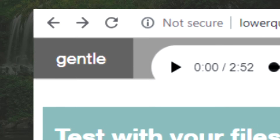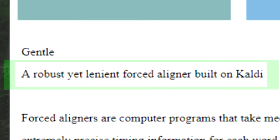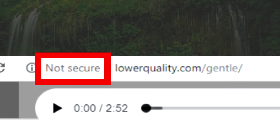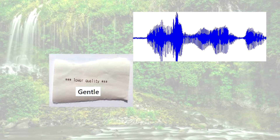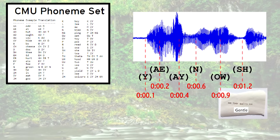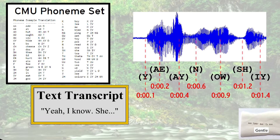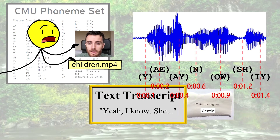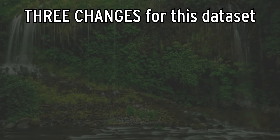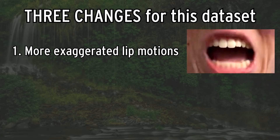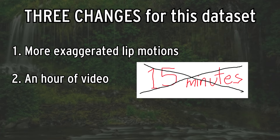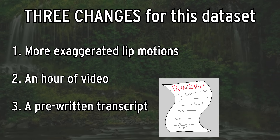Fortunately, we found Gentle — a robust yet lenient forced aligner built on Kaldi by LowerQuality.com. If you give it an audio file, it'll align CMU phonemes to the audio with appropriate timestamps. Unfortunately, you need to provide a text transcript to assist the aligner, and this video didn't have one. At this point, there were three changes we wanted to make to our dataset: more exaggerated lip motions, closer to an hour's worth of video instead of 15 minutes, and a pre-written transcript.